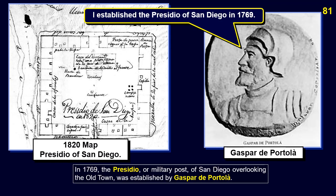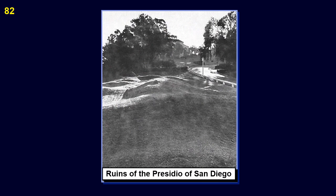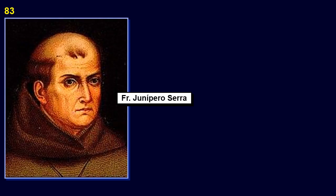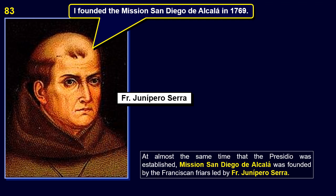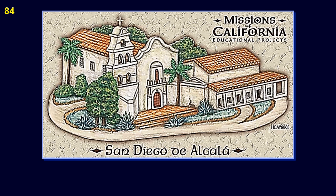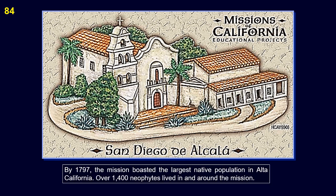In 1769, the Presidio, or military post, of San Diego overlooking the old town was established by Gaspar de Portola. These are the ruins of the Presidio of San Diego. At almost the same time that the Presidio was established, Mission San Diego de Alcala was founded by the Franciscan friars led by Father Junipero Serra. By 1797, the mission boasted the largest native population in Alta California, with over 1,400 neophytes living in and around the mission.